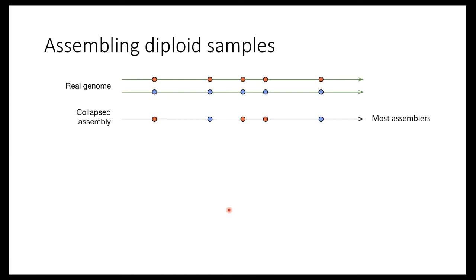I'll go into the methods about how we reconstruct this assembly. In this figure at the top, there's the real genome — humans are diploid, we have two haplotypes, one from the mother and one from the father, with red dots indicating heterozygous alleles. For most existing assemblers, they collapse the two haplotypes together, and when there's a heterozygous allele, it randomly chooses between paternal and maternal alleles — a random separation between the two alleles.